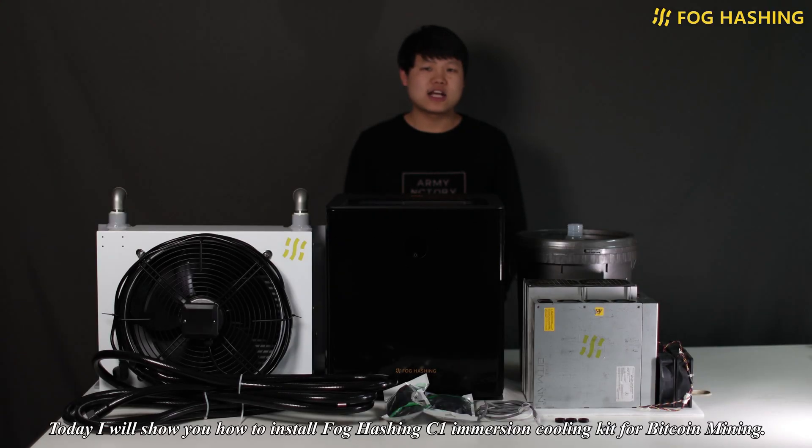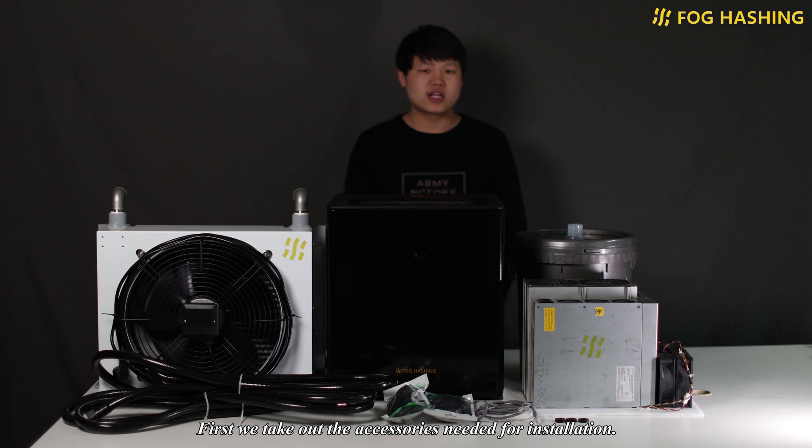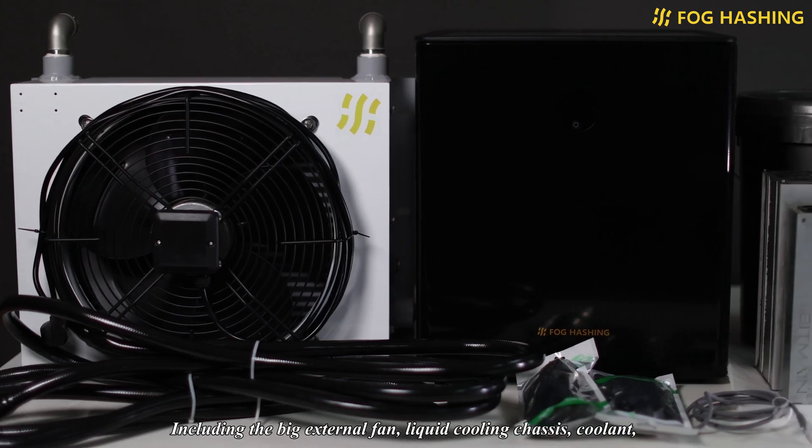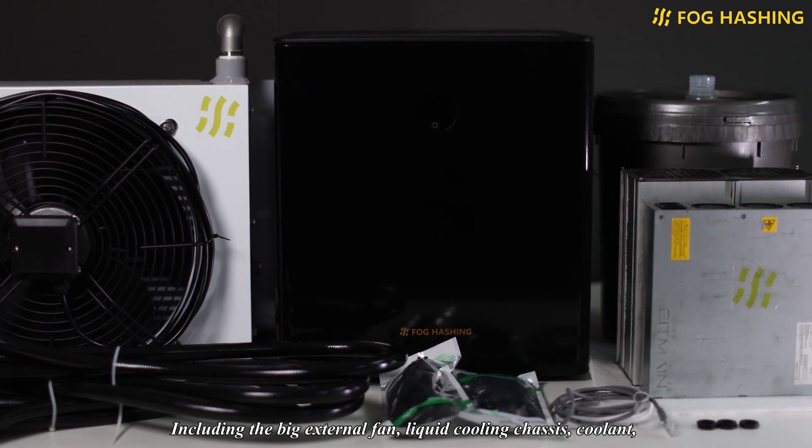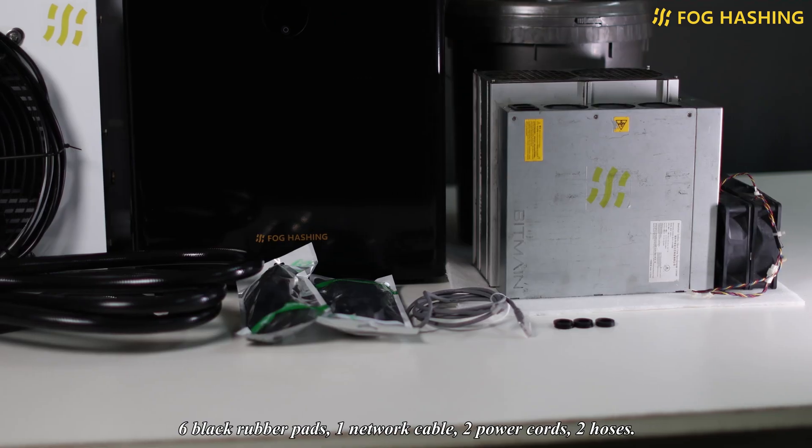Hello everyone, today I will show you how to install the Fog Hashing C1 immersion cooling kit for Bitcoin mining. First, we take out the accessories needed for installation including the external fan, liquid cooling chassis, coolant, six black rubber pads, one network cable, two power cords, and two hoses.